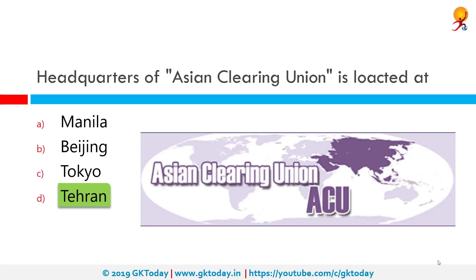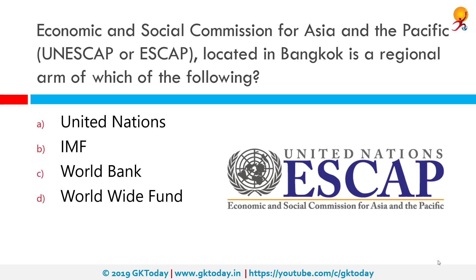The Asian Clearing Union, with headquarters in Tehran, Iran, was established on December 9, 1974, at the initiative of the United Nations Economic and Social Commission for Asia and the Pacific — UNESCAP — which is located in Bangkok. UNESCAP is a regional arm of the United Nations and is one of the five regional commissions under the jurisdiction of the United Nations Economic and Social Council.